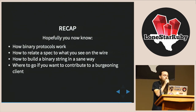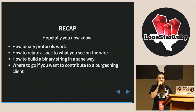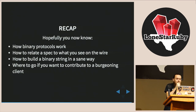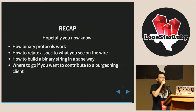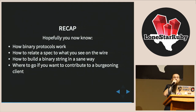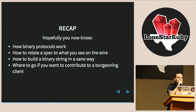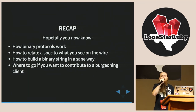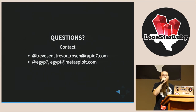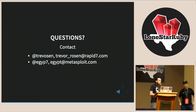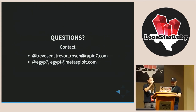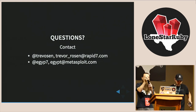Hopefully you now understand a little about how binary protocols work in general, how a spec turns into binary data on the wire, how to build that binary data in Ruby, and where to go if you want to contribute to an awesome SMB client. Any questions? Thanks, everybody.